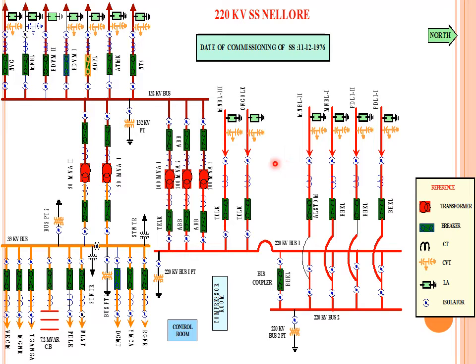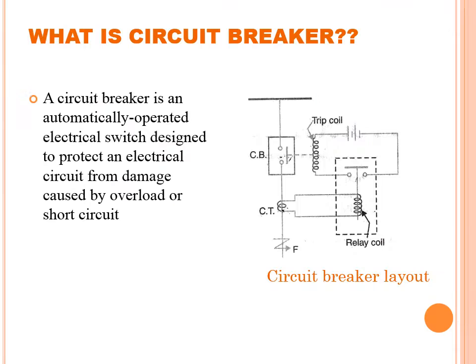Isolators are a type of switching device but they are off-load devices, whereas circuit breakers are on-load devices. The key difference is that a circuit breaker works on load, but an isolator works only when there is no load — that is, off-load.